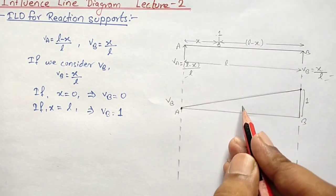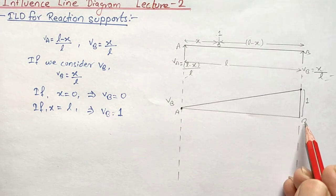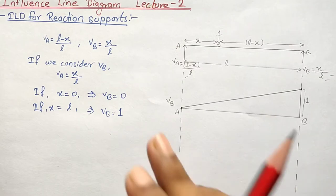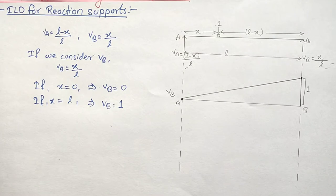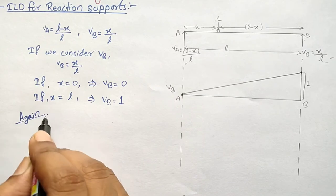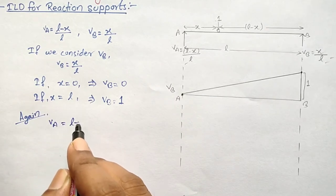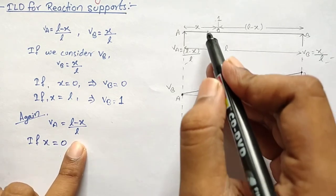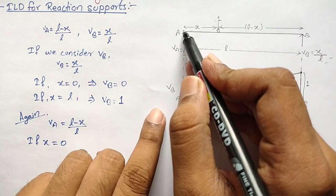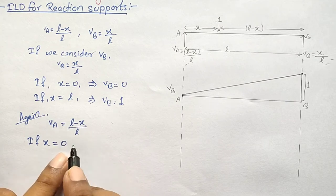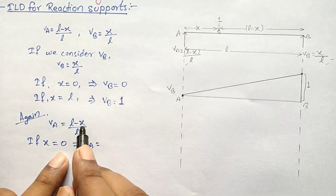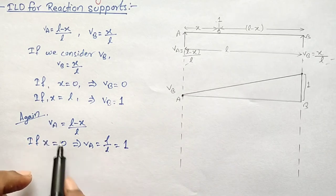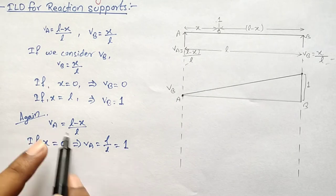This triangular portion represents the influence line diagram for the reaction at support B. Similarly, if we draw the influence line diagram for support A, we use VA equals (L minus x) upon L. When x equals 0 (unit load at A), VA equals L upon L equals 1. When x equals L (unit load at B), VA equals 0.